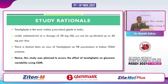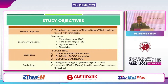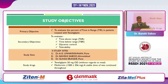The rationale: teneligliptin is one of the most widely prescribed glyptins in our country, administered at 20 mg once daily, with some centers up-titrating to 40 mg. There is limited data on teneligliptin using time in range parameters in Indian type 2 diabetic patients. While efficacy data exists, data on how much it improves time in range was lacking. Hence this study was planned to assess the effect of teneligliptin on glycemic variability using continuous glucose monitoring.